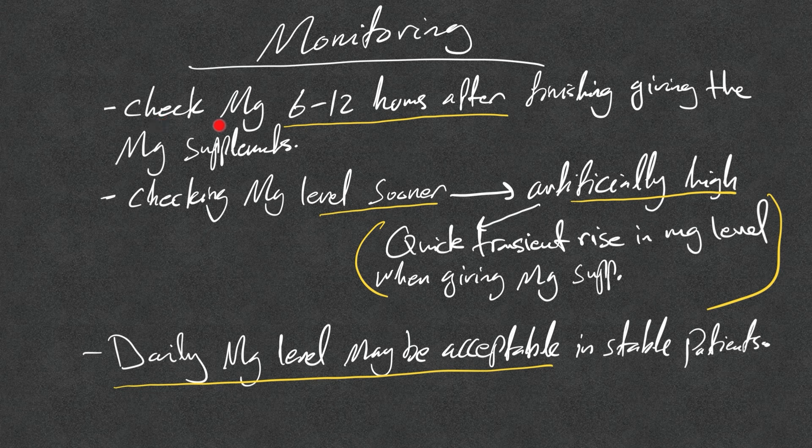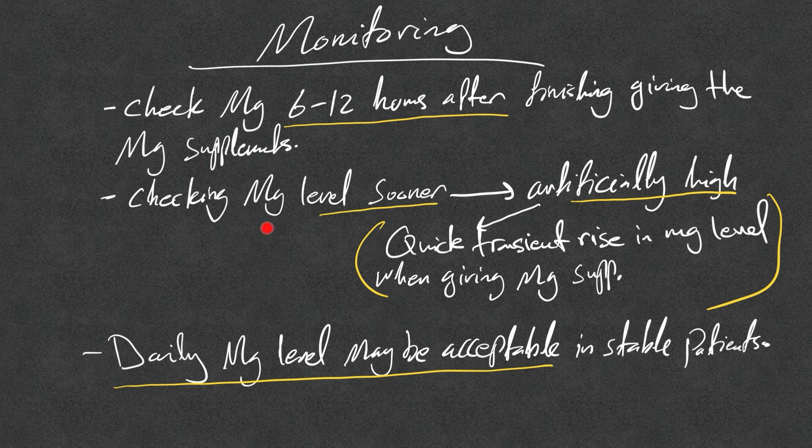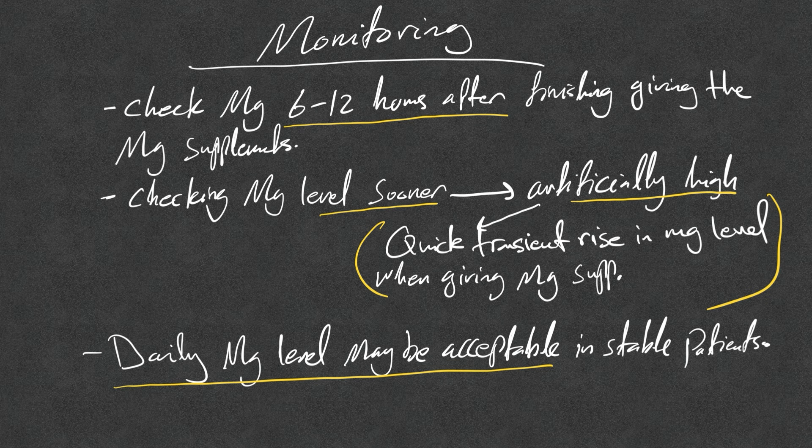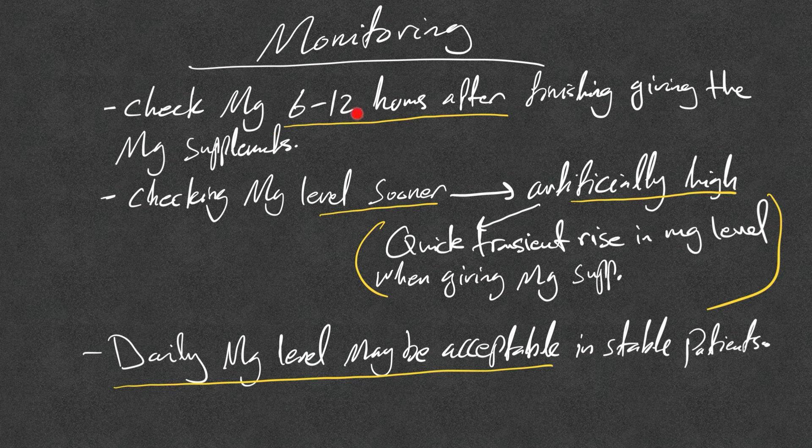Monitoring: check magnesium 6 to 12 hours after finishing giving the magnesium supplements. Do not check it sooner because if you do check it sooner, it will be artificially high. Remember, when we give magnesium supplements, there will be a quick transient rise in magnesium level. Daily magnesium level may be acceptable in stable patients, so you don't have to do it every 6 or 12 hours; you can do it daily. But with IV magnesium, I always check it 6 to 12 hours, and this may be acceptable with oral magnesium.